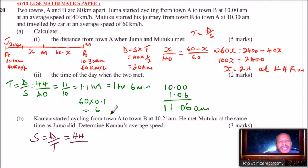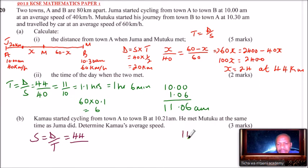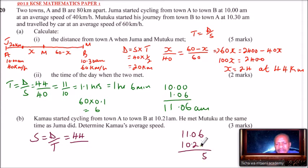Divide 44 km by the time Kamau took. Kamau started at 10:21 and they met at 11:06. To subtract: 66 minutes minus 21 minutes — borrowing 60 minutes when subtracting — gives 45 minutes. So Kamau took 45 minutes to cover 44 kilometers.